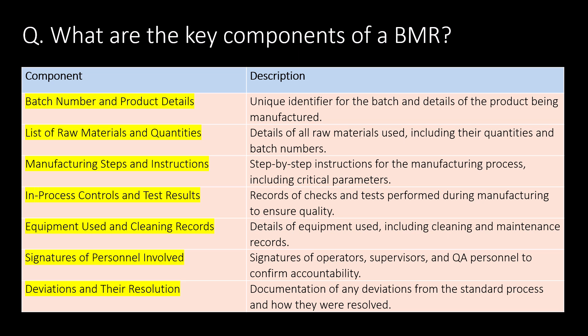First question: what are the key components of a BMR? Batch number and product details, list of raw materials and quantities, manufacturing steps and instructions, in-process controls and test results, equipment used and cleaning records, signatures of personnel involved, and deviations and their resolution are the key components of a BMR.